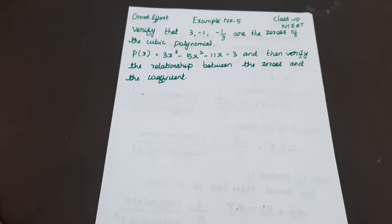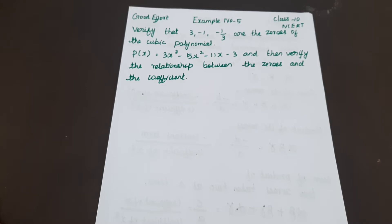Welcome to Good Effort Channel. Good morning students. In example number 5, verify that 3, minus 1, minus 1 by 3 are the zeros of the cubic polynomial P(x) = 3x³ - 5x² - 11x - 3, and then verify the relationship between the zeros and the coefficients.